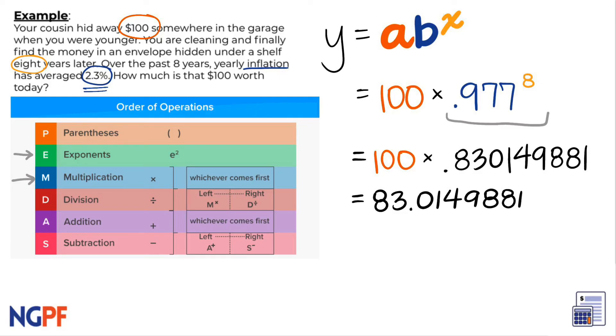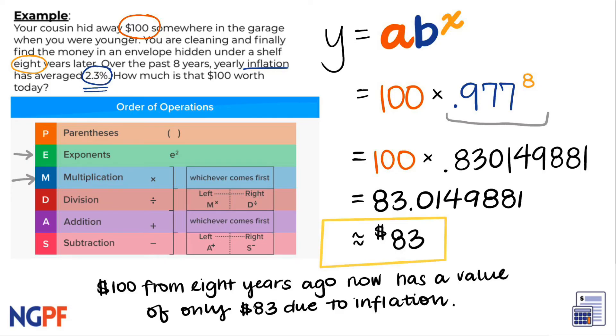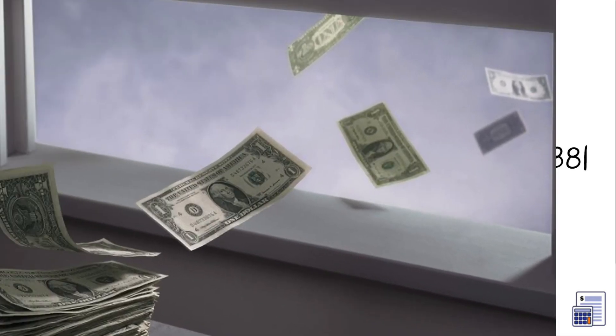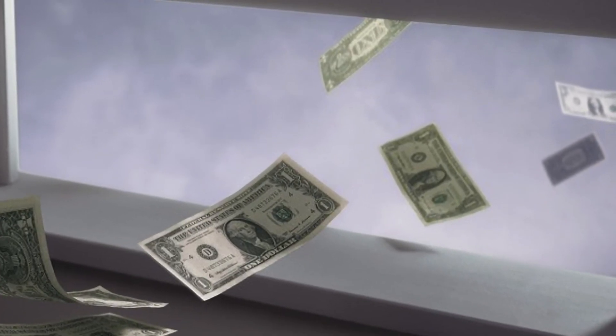This means that the $100 your cousin set aside 8 years ago has decreased in value to now only being $83 due to inflation. That's money out the window! Because the value of your $100 decreased, you have less purchasing power and can buy less with that same amount of money today than you would have been able to 8 years ago.